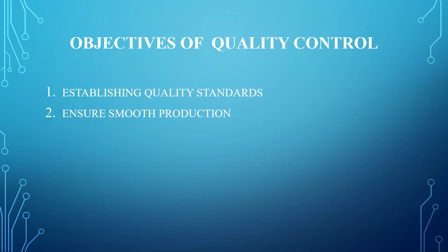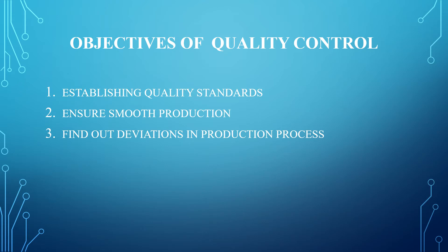The third objective is to find out deviations in the production process. It is not only important to establish quality standards, but also essential to take corrective measures whenever there is a change in the set standards. When you are producing and inspecting and analyzing, whenever you find any deviation, the third important objective is to correct those deviations.